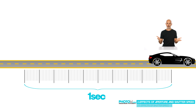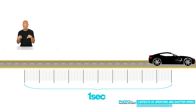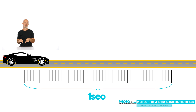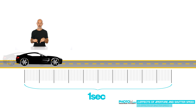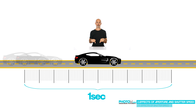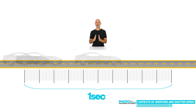Let's divide our second into 100 pieces. After the first, the car is here. After the tenth, the car is here. And after the fiftieth, here. And so on. You can hardly see it though, because it is just there for that very fleeting moment.